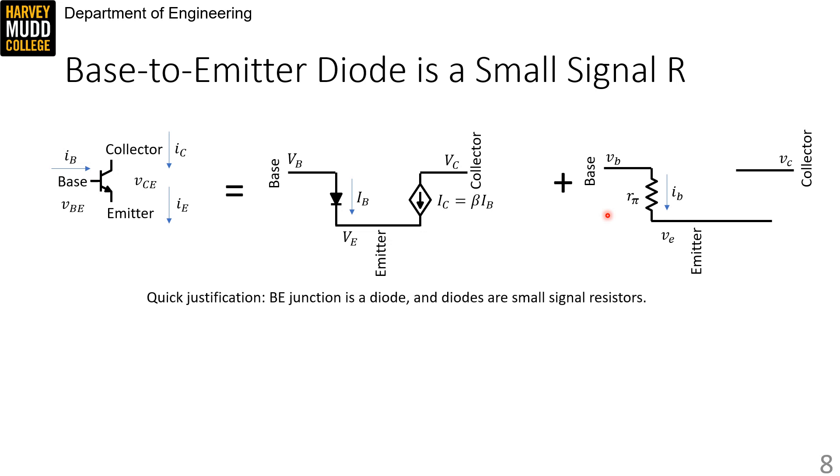The quickest way to understand why we choose a resistor to show the relationship between small signal IB and small signal VBE is that our large signal model has a diode connected between the base and the resistor. And we've already gone through the exercise of finding the small signal model for a diode, we found it was a resistor with a value n phi TH over ID, and so we'd expect something similar for this junction.